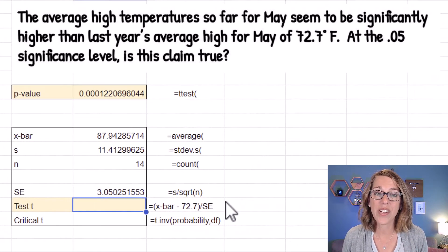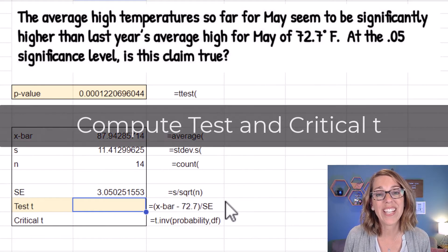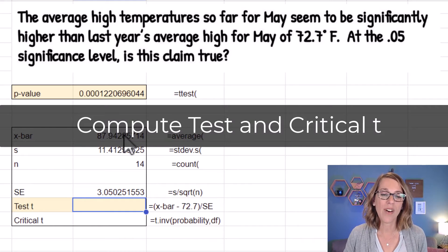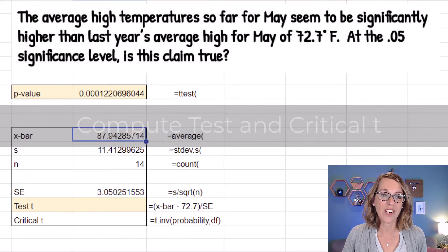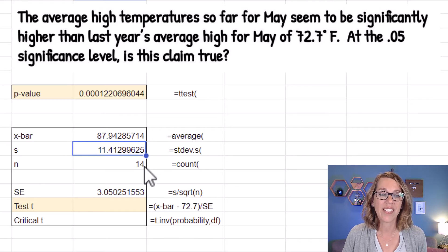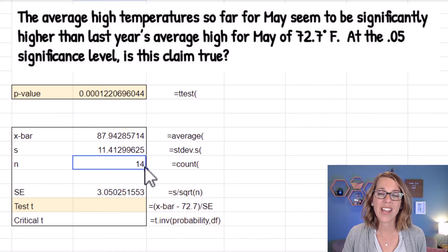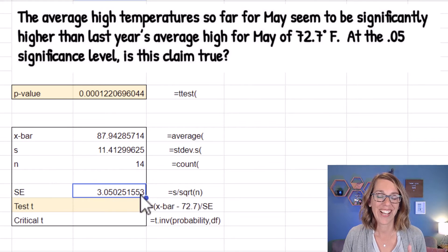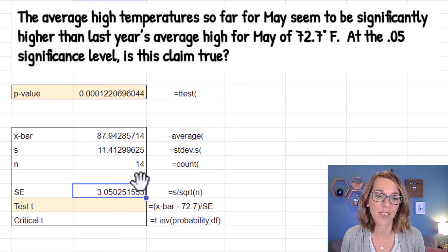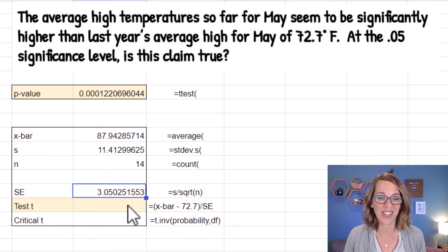The second and third way are going to give me both my test value t and my critical value t. In the second way, I have already computed my average. You can see what I've typed in there for the average or the sample mean, the sample standard deviation, and I used the equals count function to come up with n. I also need that standard error, which is my standard deviation divided by the square root of my count. And I've done that here.